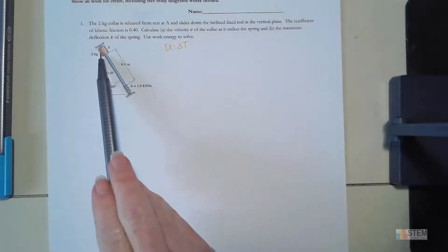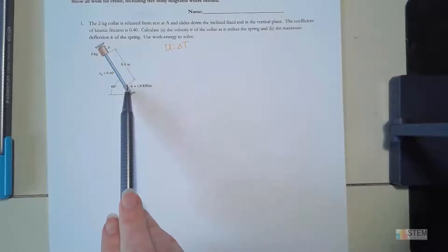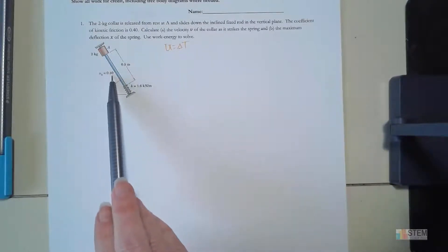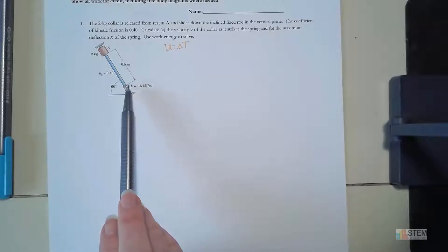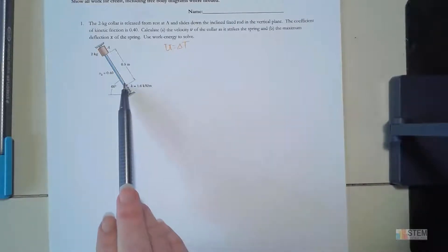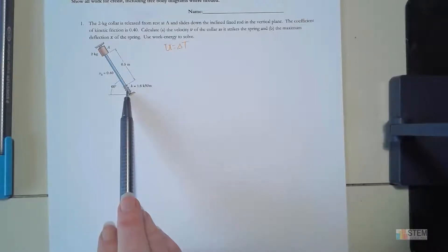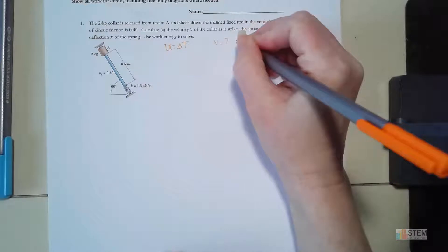We've got this collar — it's two kilograms, released from rest at A, and it's going to slide down and hit this spring. It has friction as it slides; the coefficient of friction is 0.4. We want to find the velocity of the collar when it hits the spring (Part A), and then in Part B we want to figure out the max deflection X of the spring. So two things: find V and find X.